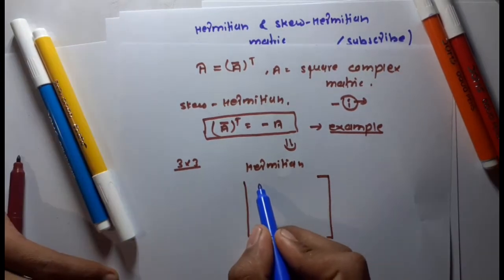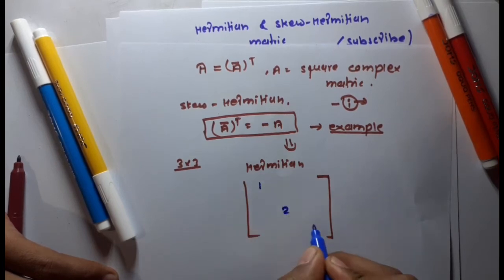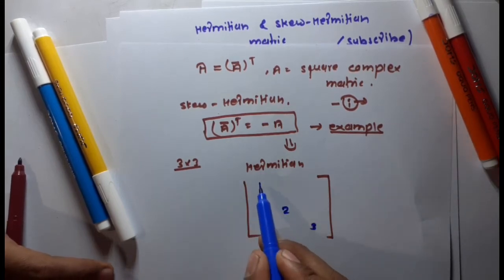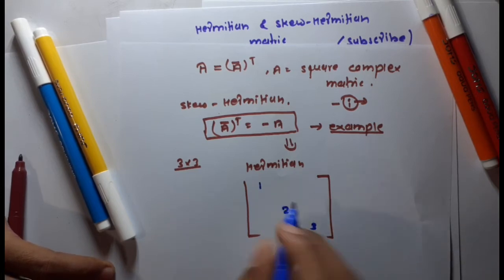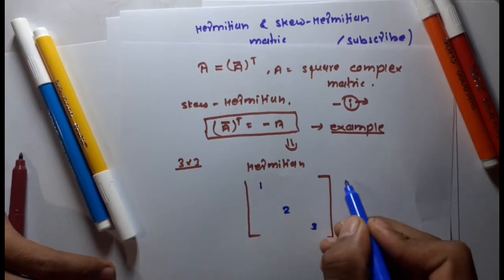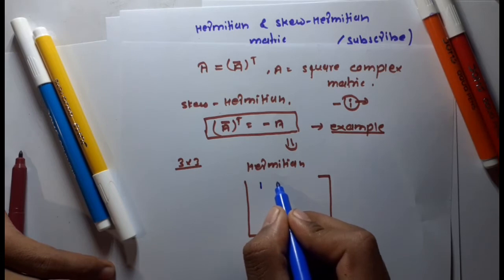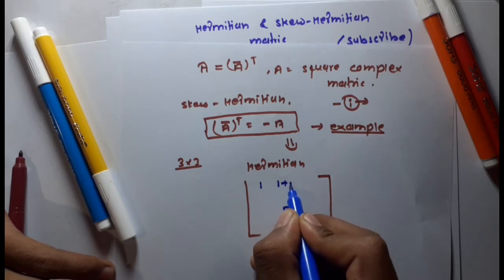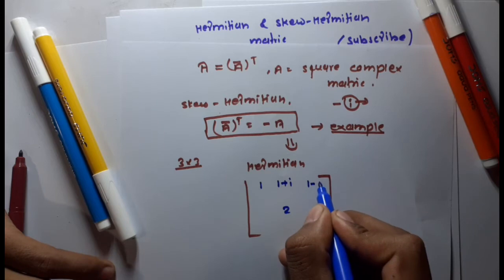For a Hermitian matrix, first write any numbers on the diagonal — let's say one, two, three. For a Hermitian matrix, diagonal entries do not need to be imaginary. Now in row one, write a complex number, such as one plus i and one minus i.